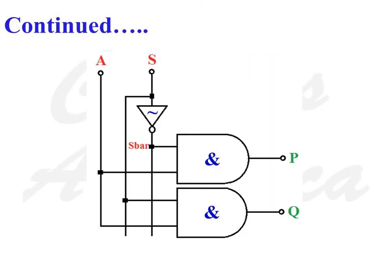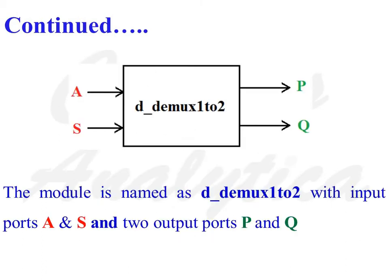This is the internal diagram of a 1 to 2 demultiplexer with input ports A and S and output ports P and Q. There are two AND gates and one NOT gate, and a wire denoted as S bar. The external view of the 1 to 2 demultiplexer is also shown. The module is named D_DMUX1to2 with input ports A and S and output ports P and Q.